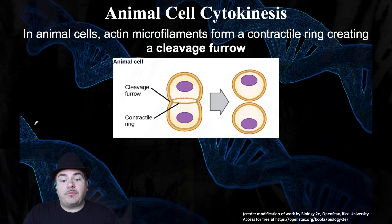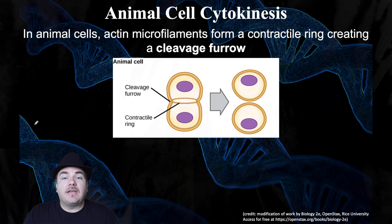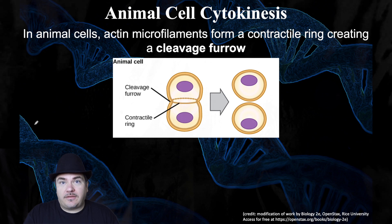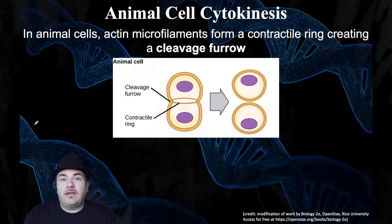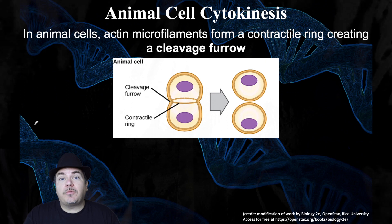Let's jump in with cytokinesis. One thing to note about cytokinesis is it happens differently in animal cells versus plant cells. If you think about that, it makes sense because between two plant cells you have a plant cell wall, but you don't have a plant cell wall between two animal cells.